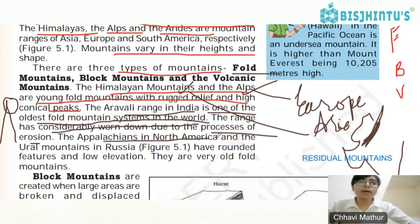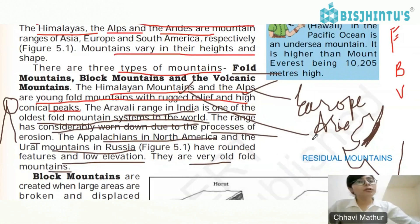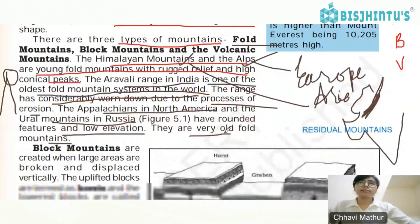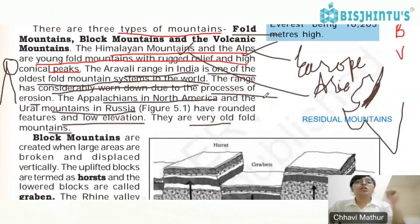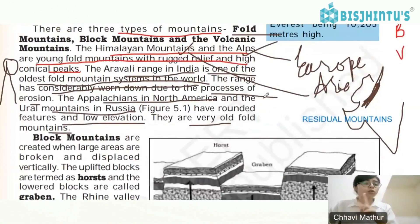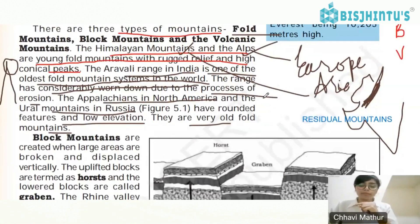The Appalachians in North America and the Ural mountains in Russia have rounded features and low elevation — they are also old fold mountains. The Ural mountains separate Asia and Europe.